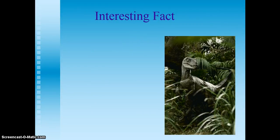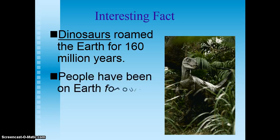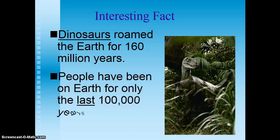Natural selection. We talked a little bit about natural selection when we looked at Darwin. Just an interesting fact for you: dinosaurs roamed the earth for 160 million years, but human beings, people like us, have only been on earth for the last 100,000 years.